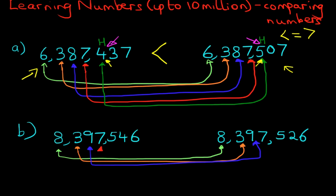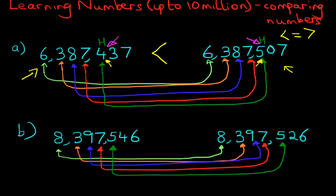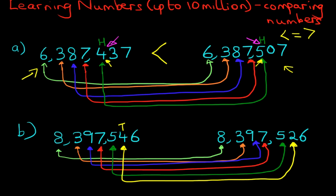We now move on to the thousands: we've got 7 here, comparing that with the thousands over here — they are both 7. So we still cannot tell which is larger and which is smaller. Moving to the hundreds: we've got 5 here, and the hundreds over here is also 5. So again, we still cannot tell. Let's keep going — we're now going to compare the tens. The number on the left has 4 tens and the number on the right has 2 tens. Now we can tell which number is larger and which is smaller.